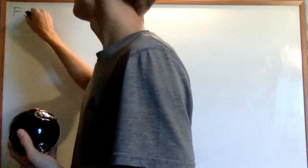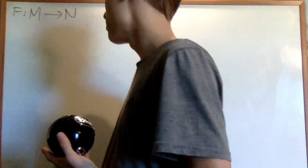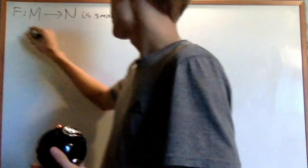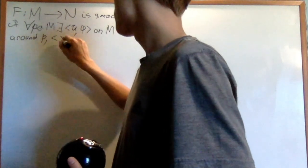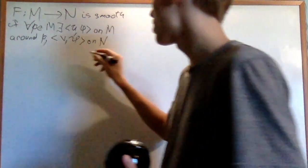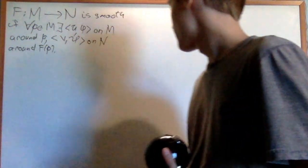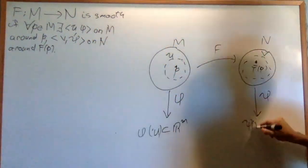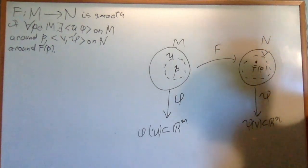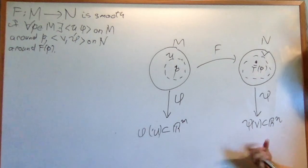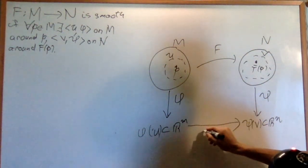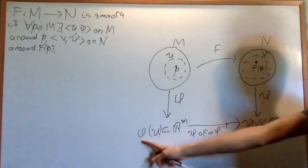Say F is a map between M, a smooth manifold, into N, a smooth manifold. We say F is smooth if for every P, an element of M, there exist two smooth charts: U, φ, a smooth chart on M around P, and also a chart V, ψ on N around F of P. We have a diagram representing this: F is smooth if ψ composed F composed φ inverse is a smooth map from φ of U into ψ of V.